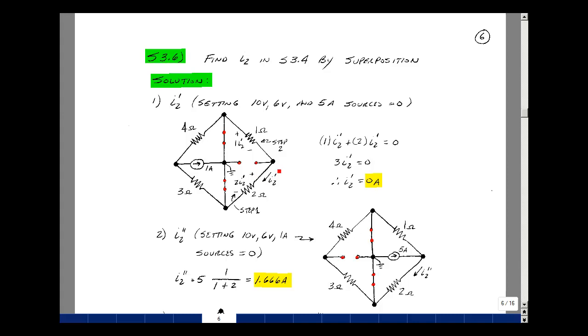So the current I2 is flowing in here, and again this is I2 to the first source, and the drop across this resistor is going to be 2 ohms times I2 prime. But that same current now is flowing in this 1 ohm resistor, so I'll get 1 times I2 prime.